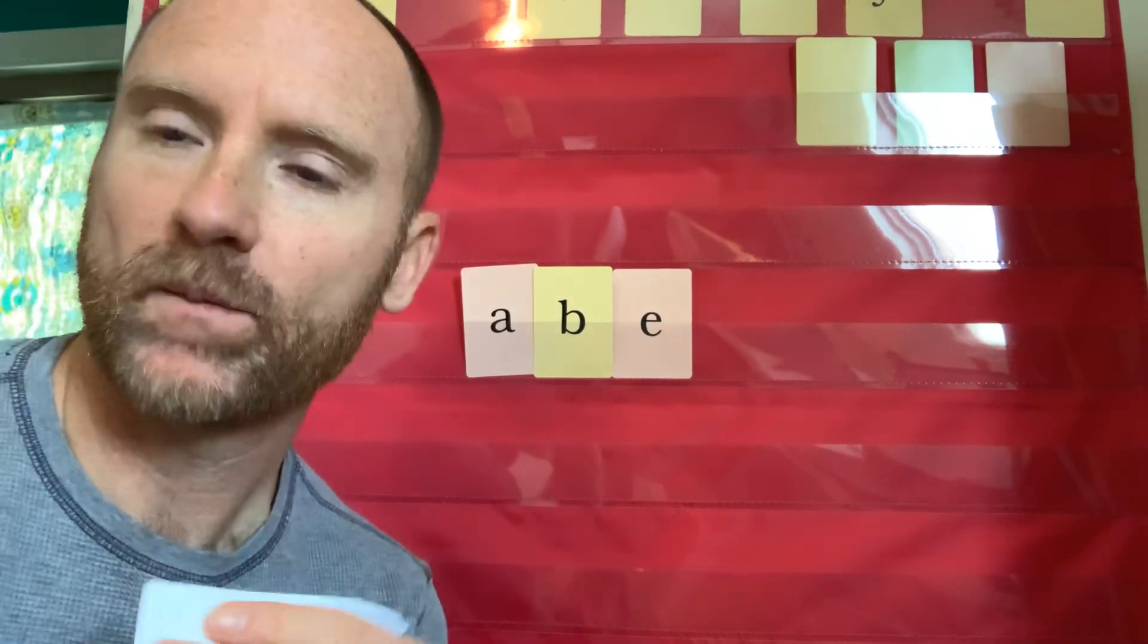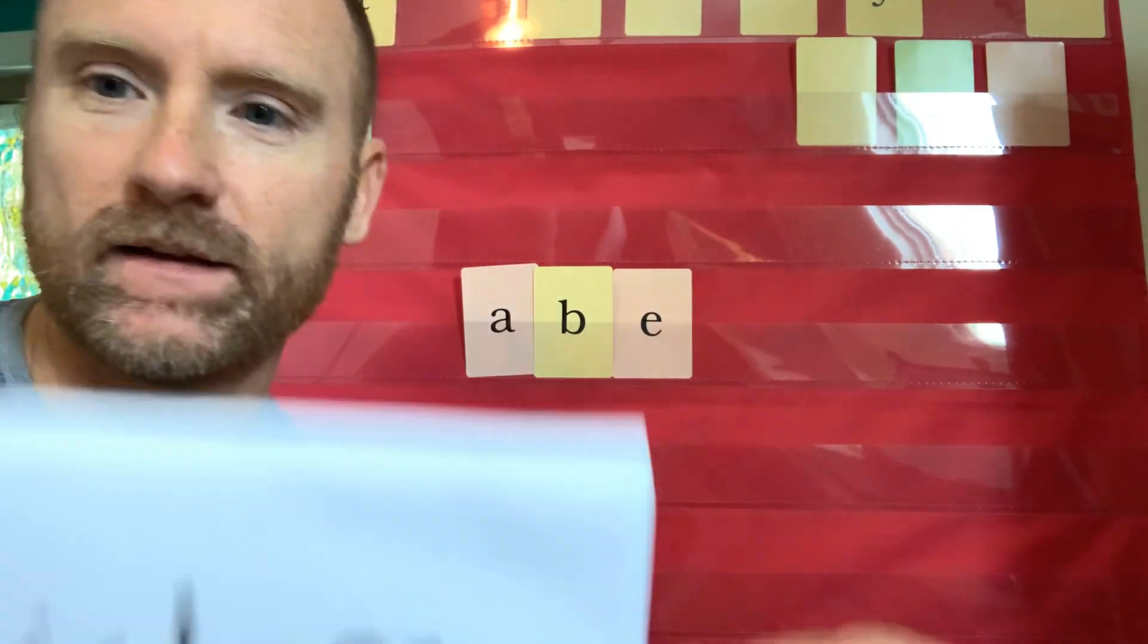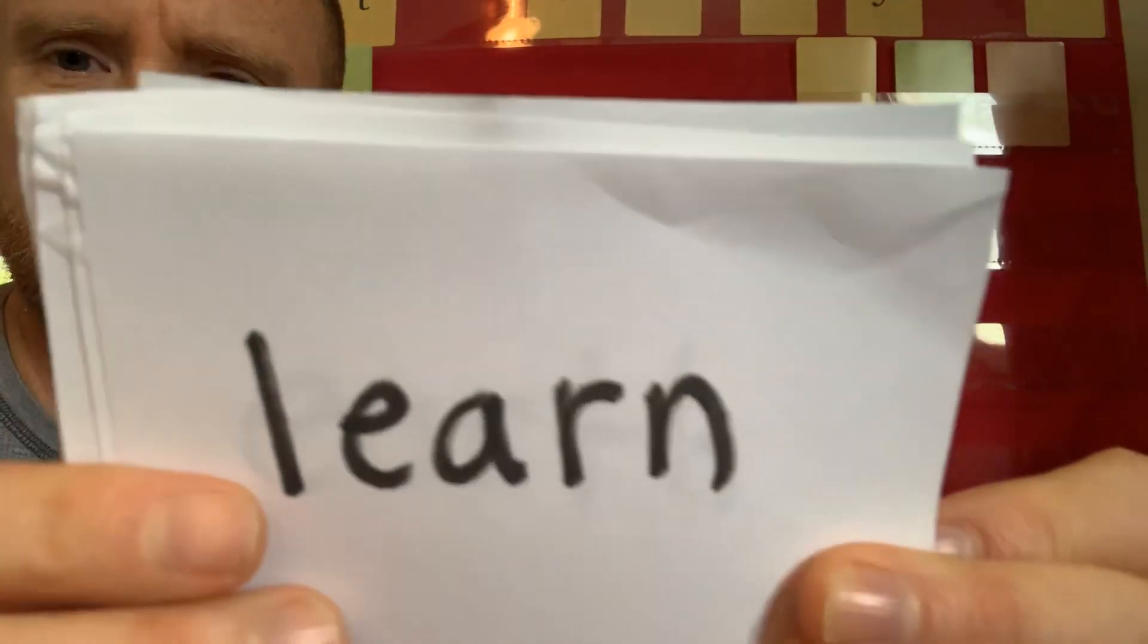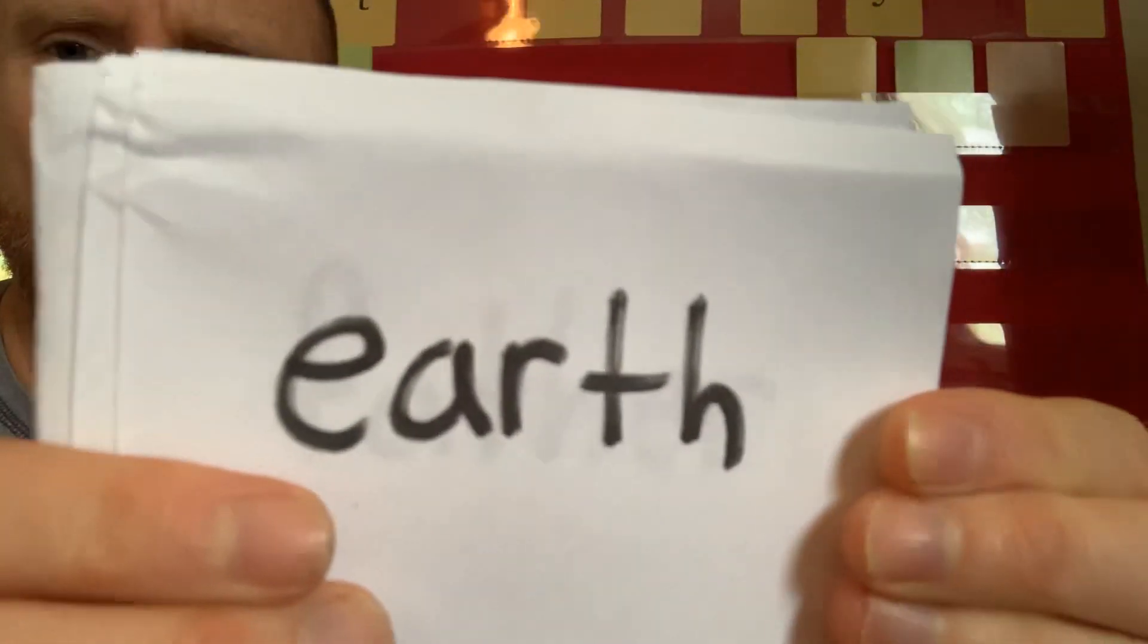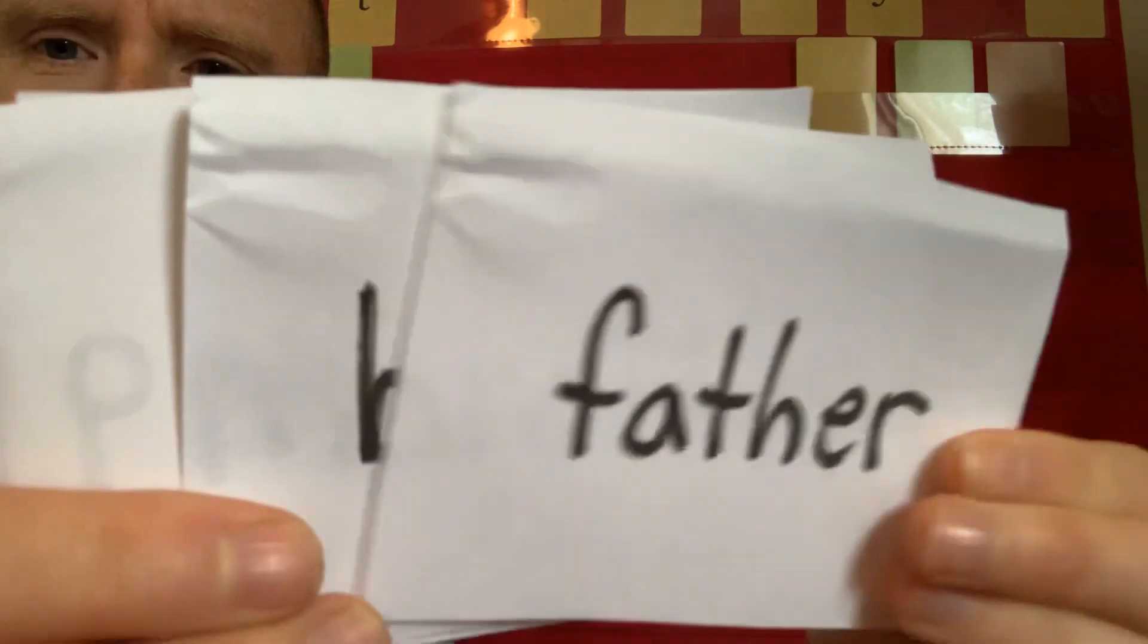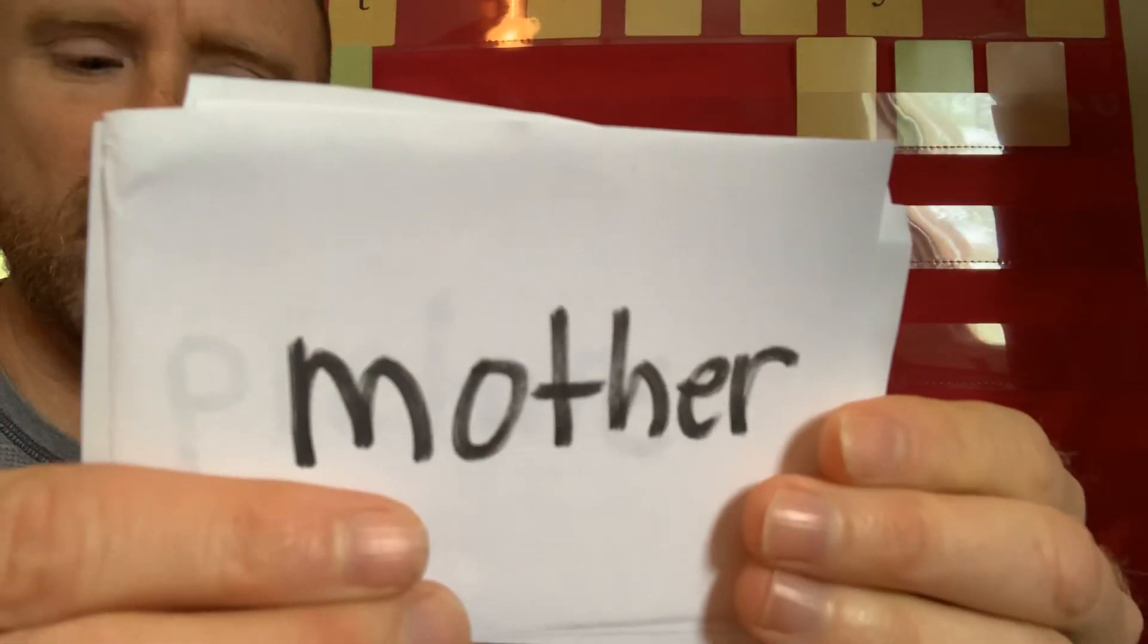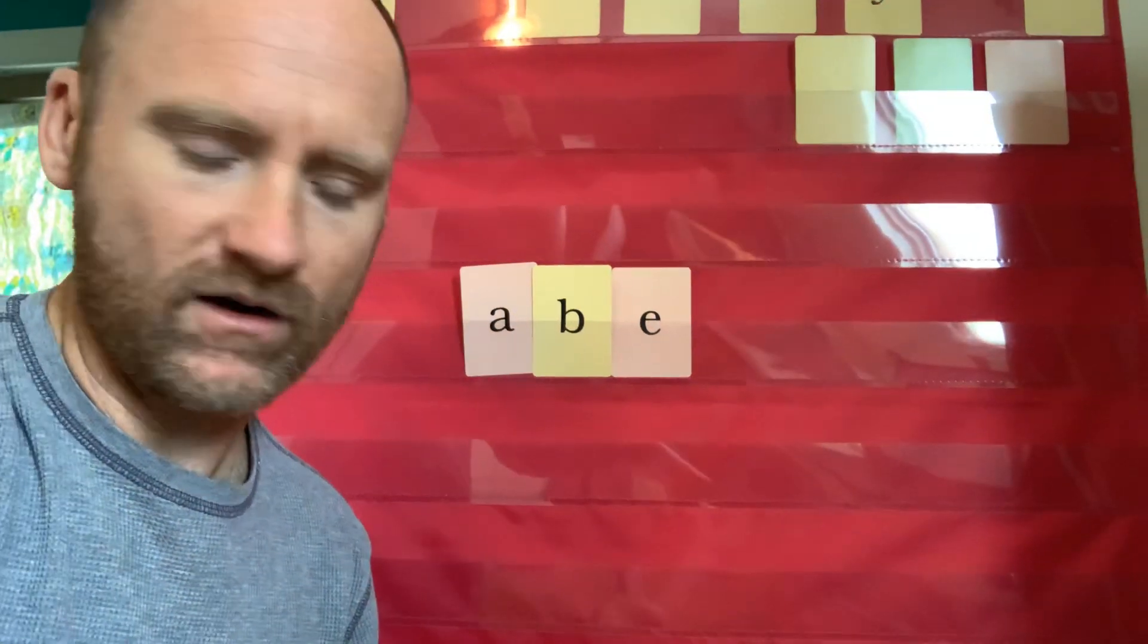Let's do trick words real quick. Remember, we don't make the sounds. You just read them. See if you can beat me. Ready? What's the word? Picture. Say the word. Learn. Learn. Earth. Father. Brother. And mother. Good.